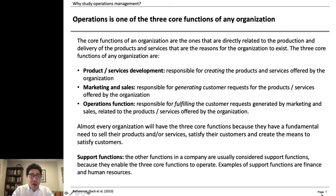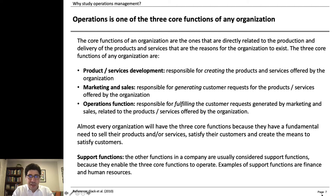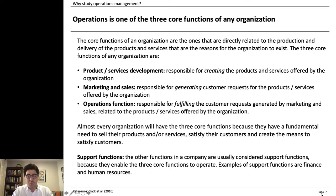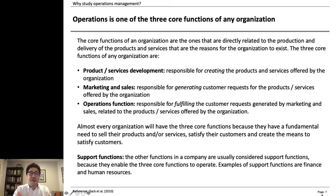Operations management is one of the three core functions of any organization. Every organization has at least these three core functions, and they are the reason for the organization to exist. They are related to the production, delivery, and selling of the products. First, you have the people who create the products and services — product and service development — who create the products that are going to be sold. Then you have the marketing and sales area, responsible for generating the customer's requests. And the operations function fulfills the customer requests generated by marketing and sales. These are complementary areas.